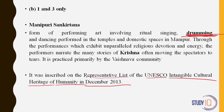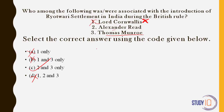Next question asks who were associated with Raiyatwari settlement during British rule. Lord Cornwallis cannot be the answer because he brought in permanent settlement in 1793. Just eliminate him and you have your answer. Alexander Reed and Thomas Munro were the people instrumental in bringing the Raiyatwari settlement in 1820. While we are on this topic: which year did Lord Cornwallis bring in permanent settlement? Write your answer in the comment section.